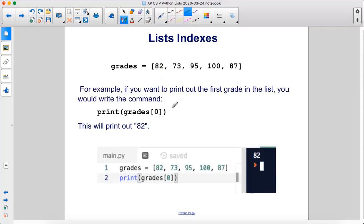For example, if you want to print out the first grade in the list, you would write this command: print grades zero. This will print out 82.